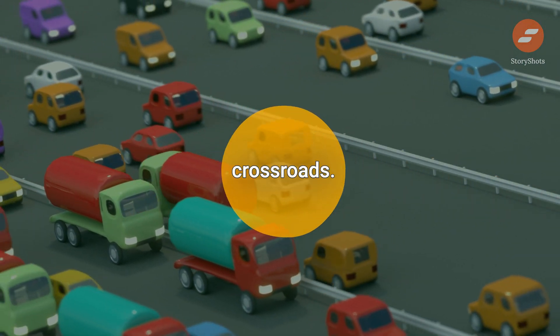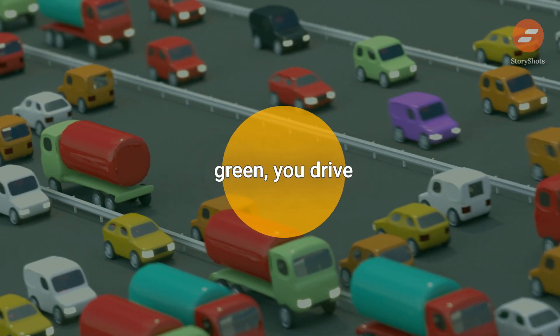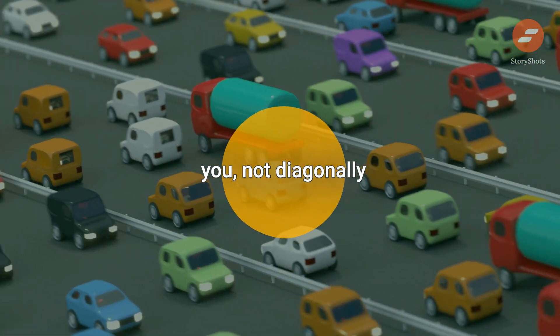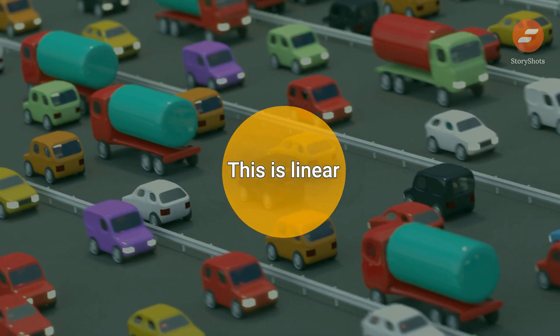Imagine yourself in a car at a crossroads. When the light turns green, you drive across the road directly in front of you, not diagonally to the opposite side. This is linear thinking.